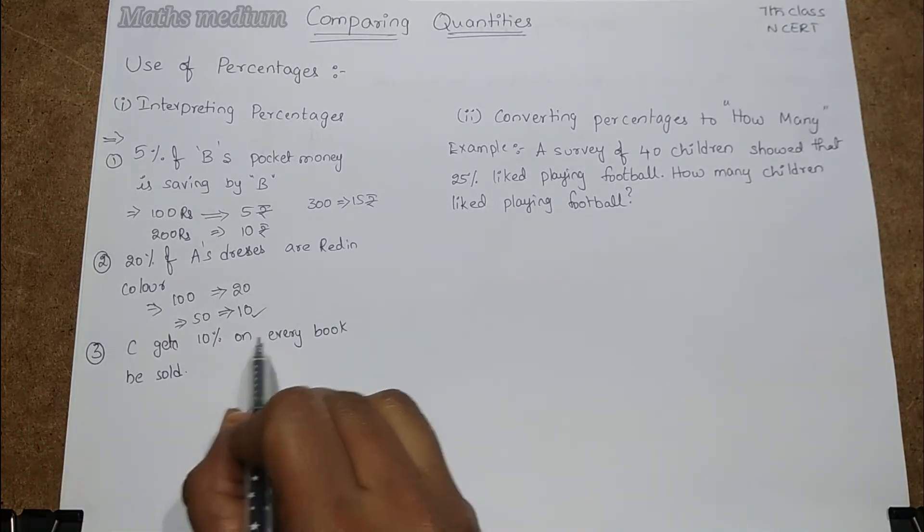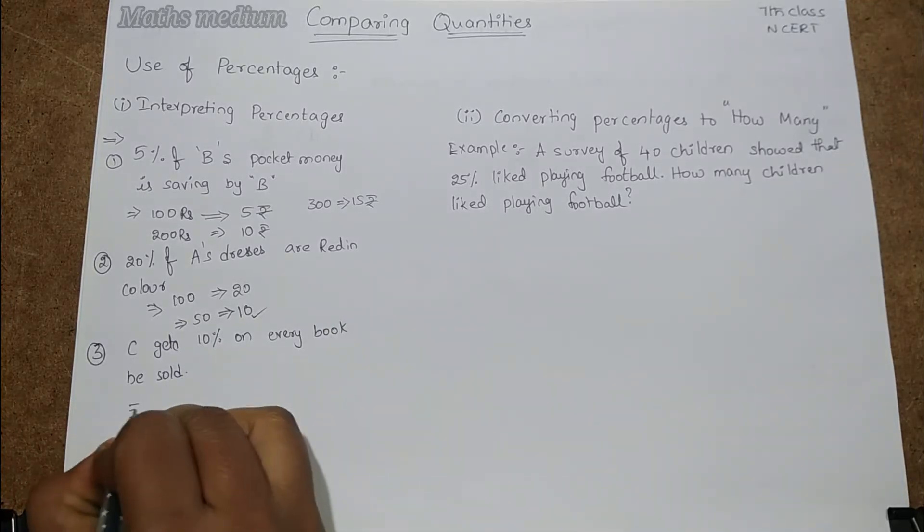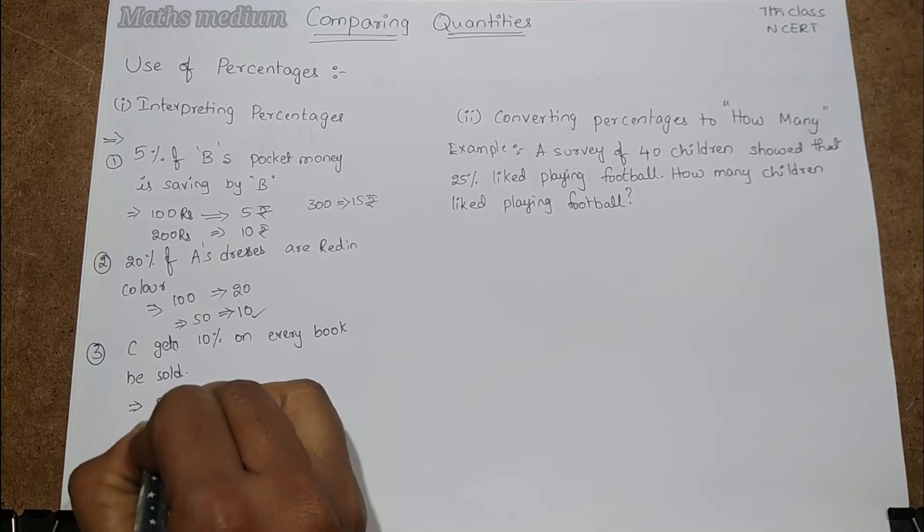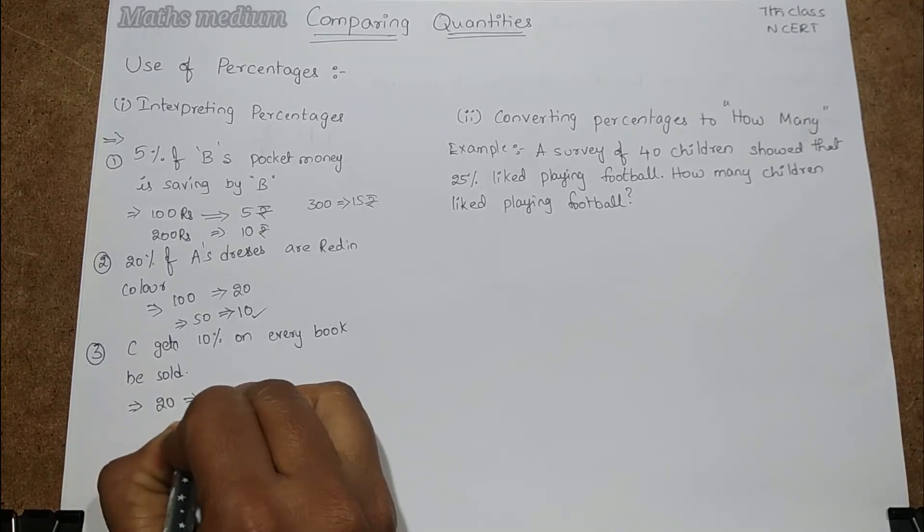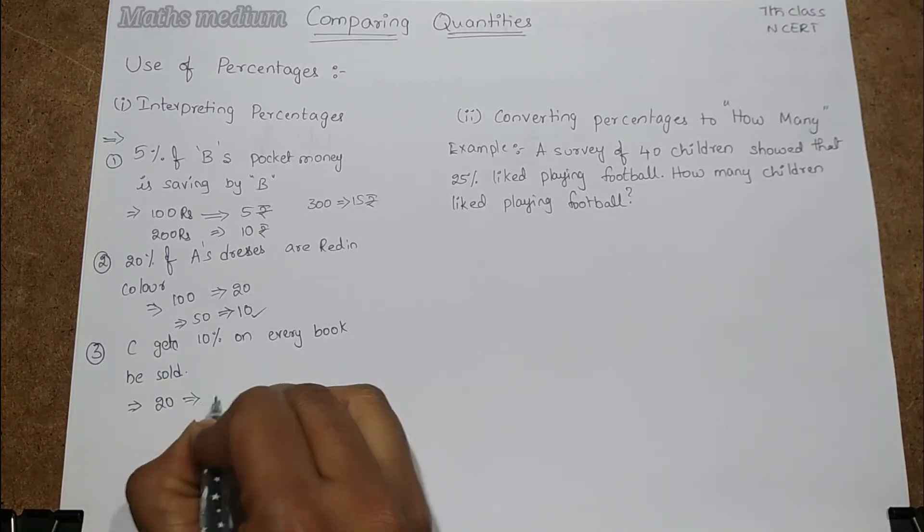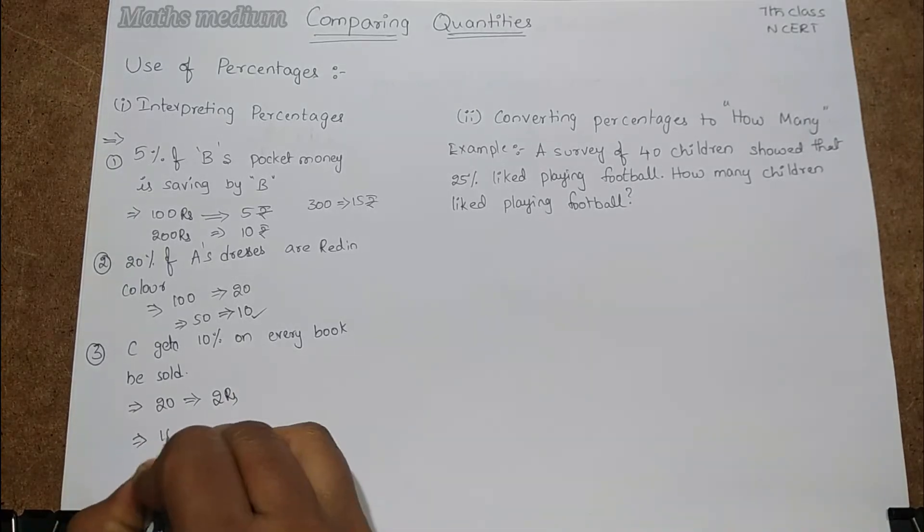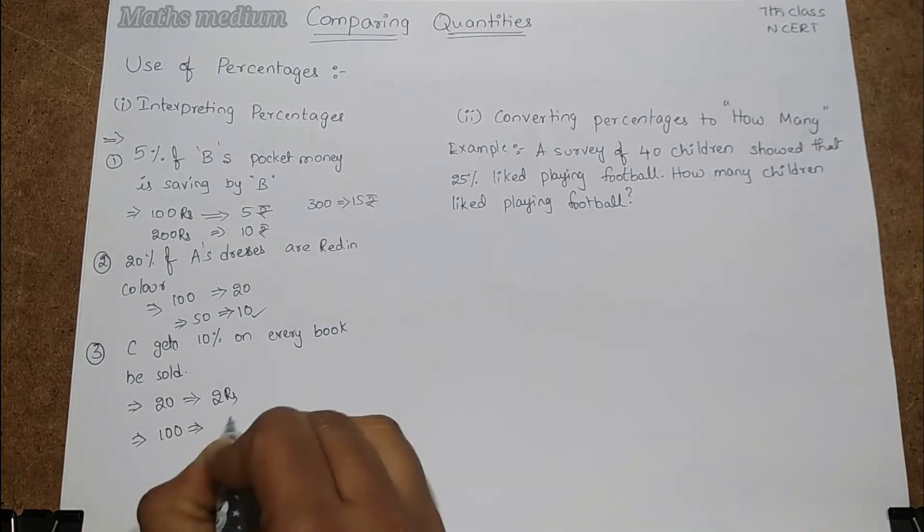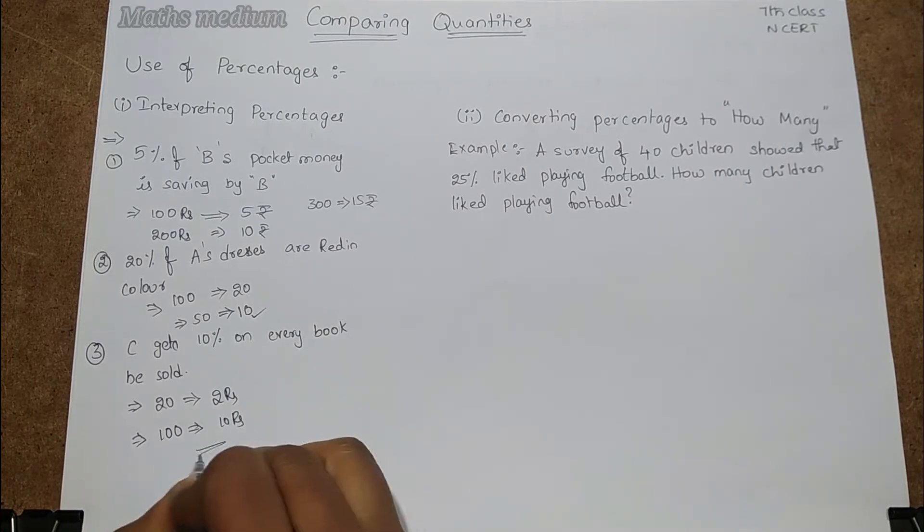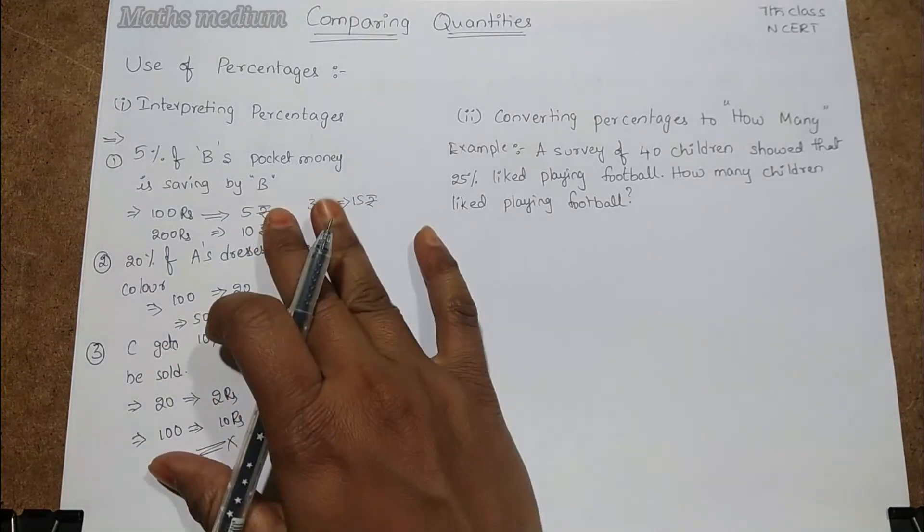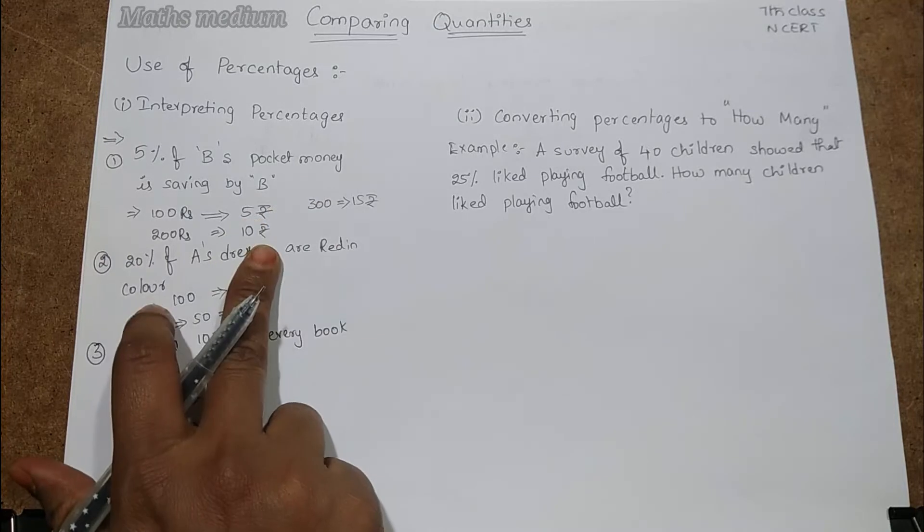Here also C gets 10% on every book he sold. If he sold 20 rupees every book, in the 20 rupees he got 2 rupees profit. Here also if he have 100 rupees sold of book, he gets 10 rupees off on every book. That is the interpreting of percentages by using the given statement.